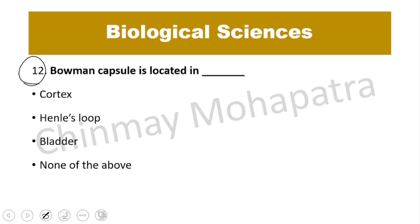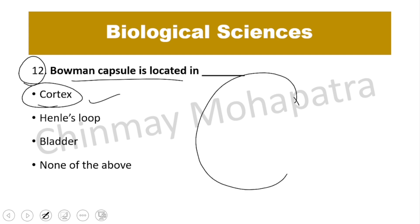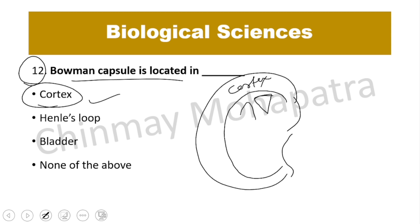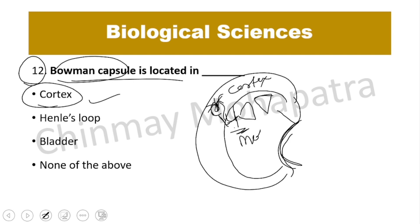Question number 12: Where is the Bowman's capsule located? The right answer is the cortex. The kidney structure has a cortex region containing the Bowman's capsule and glomerulus, and the collecting duct is in the medulla region. The depression is called the hilum and the pelvic region is the wider part of the ureter.